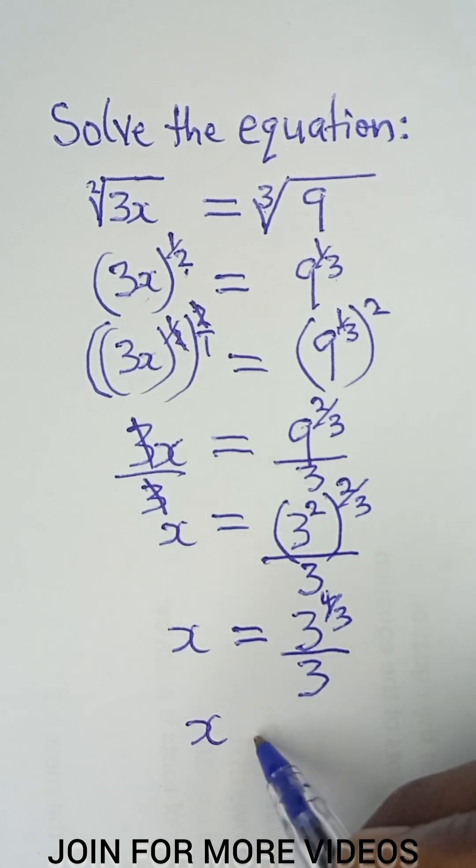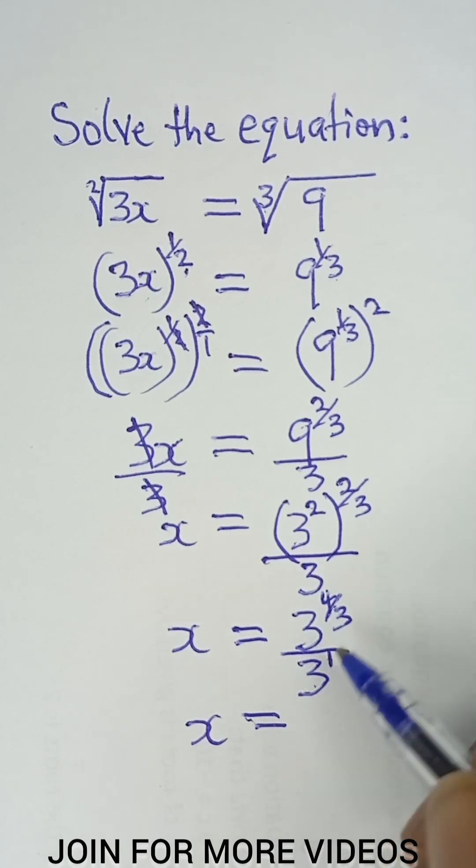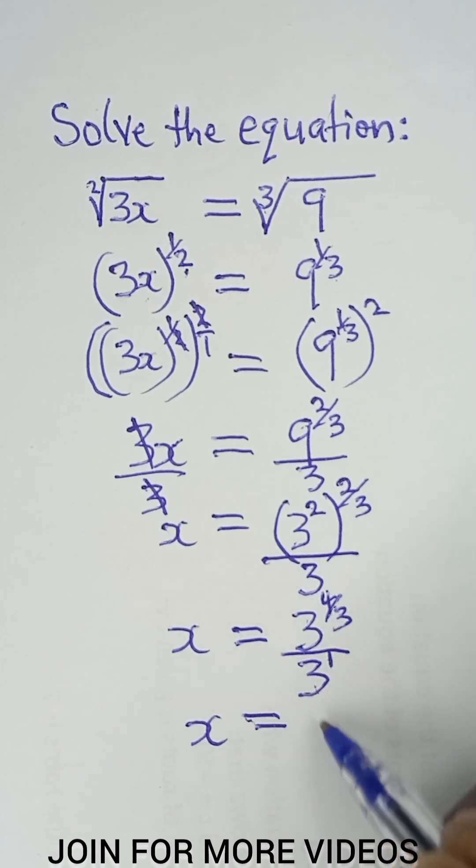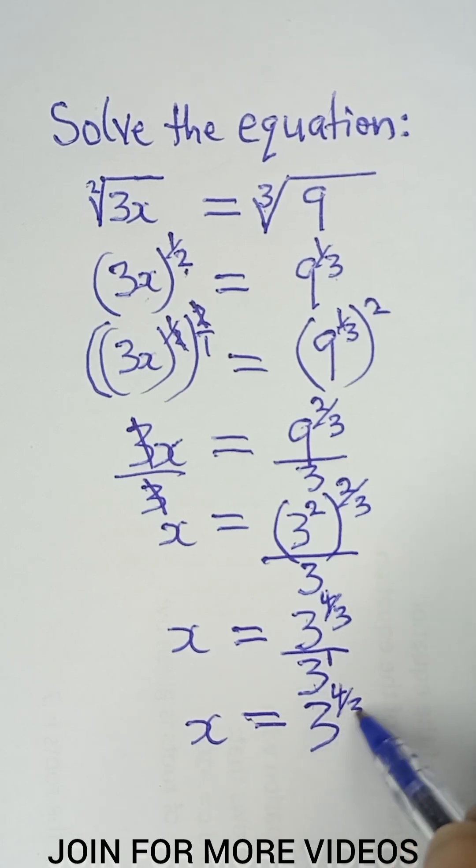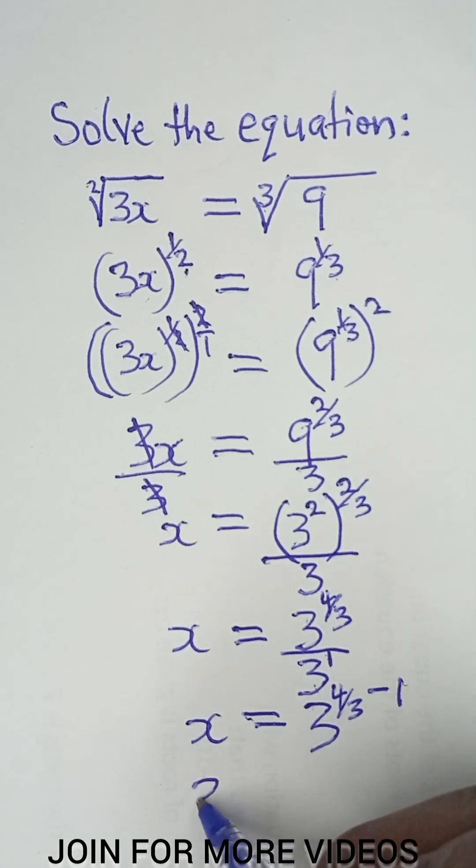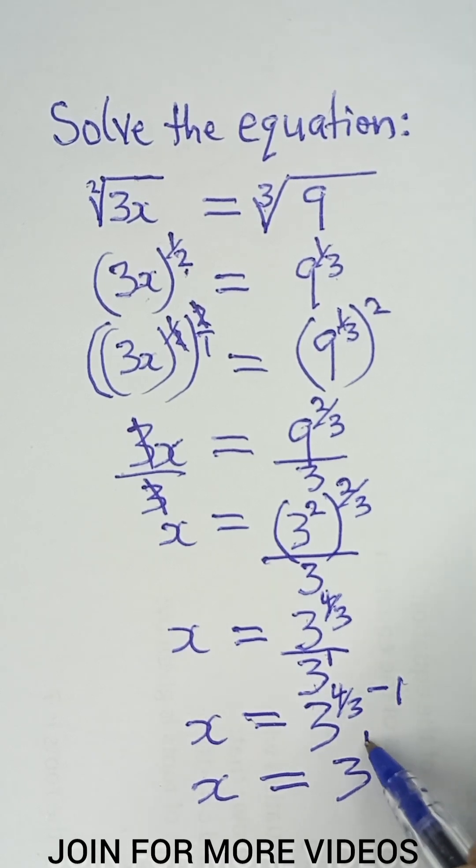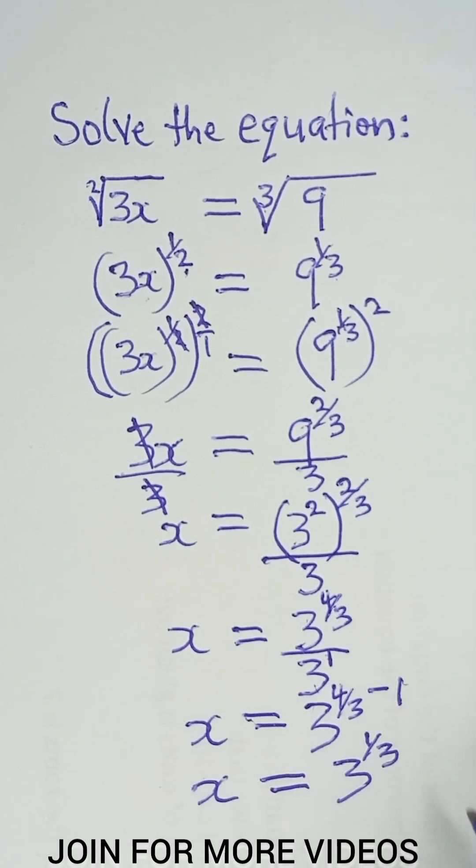Now, according to indices, when I have the same base—this is like 3 raised to the power of 1—I subtract the powers in division. So x equals 3 raised to the power of 4/3 minus 1, which gives 1/3.